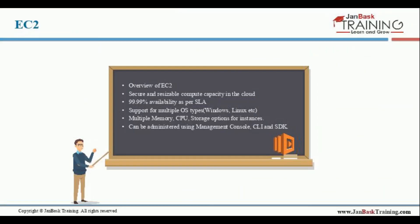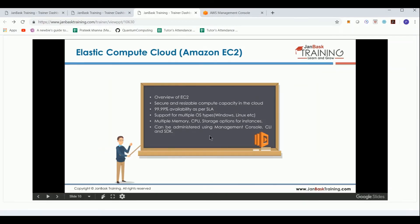Now let's take a look at Elastic Compute Cloud, which was the first service we saw on the management console. EC2 provides a compute platform. When using AWS, it provides secure and resizable compute capacity in the cloud.